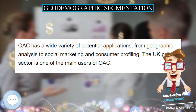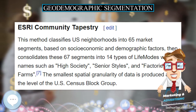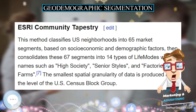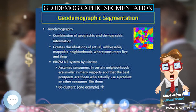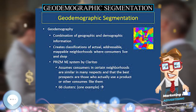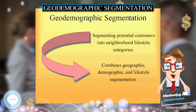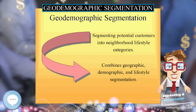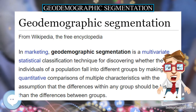SOM has been proposed as an improvement over the k-means method, for it provides a more flexible approach to census data clustering. The SOM method has been recently used by Spielman and Thill (2008) to develop geodemographic clustering of a census data set concerning New York City.